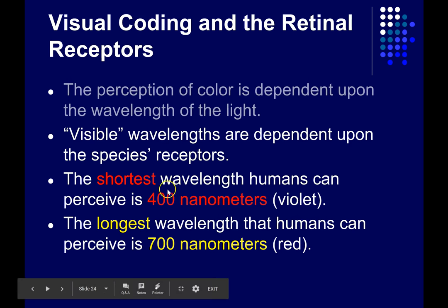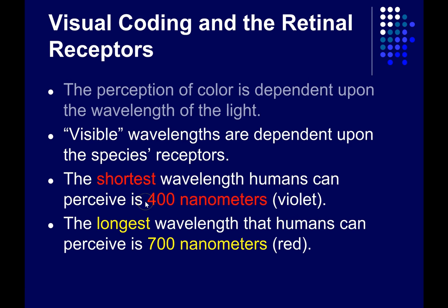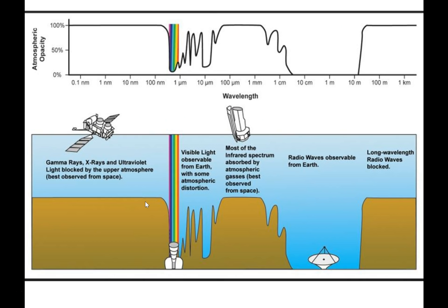But why is it that we're sensitive to this narrow band of wavelengths? Why not be sensitive to other wavelengths of electromagnetic energy as well? This shows part of the answer. Both of these plots are showing you how opaque the atmosphere is to different wavelengths of electromagnetic energy — how much of the energy at those wavelengths makes it through the Earth's atmosphere to the Earth's surface.